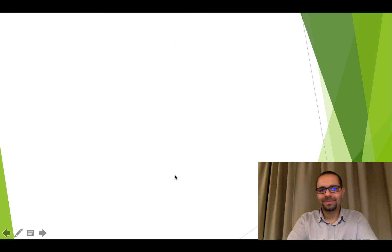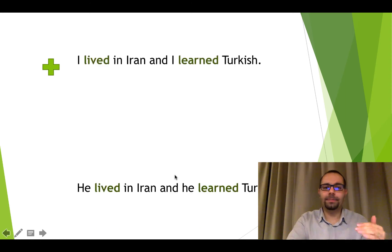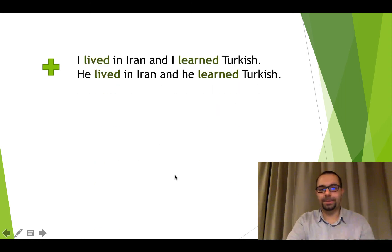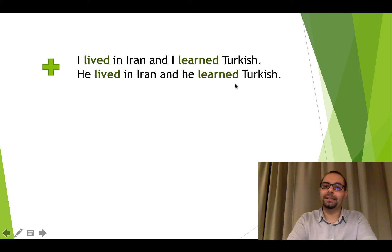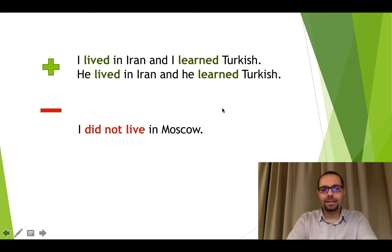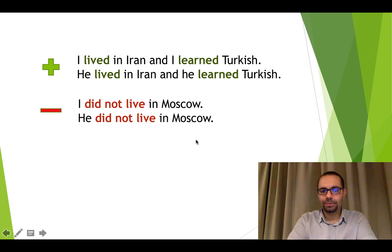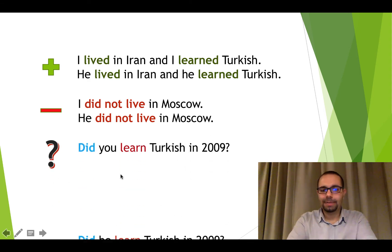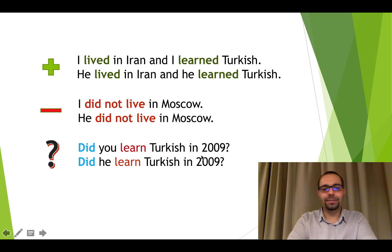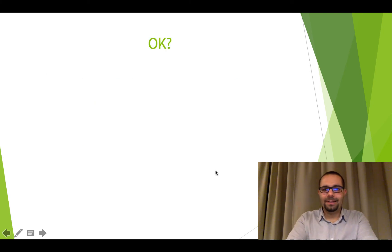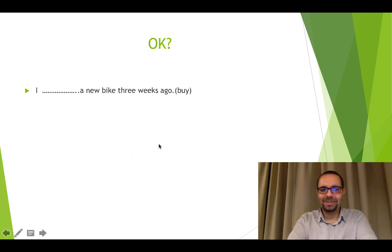Last week I spoke to my mother on Skype — it was last week, over. Here we have the positive form of simple past: I lived in Iran and I learned Turkish when I was in my country. History: he lived in Iran and he learned Turkish. Negative: I didn't live in Moscow, and he didn't live in Moscow. To ask questions: Did you learn Turkish in 2009?